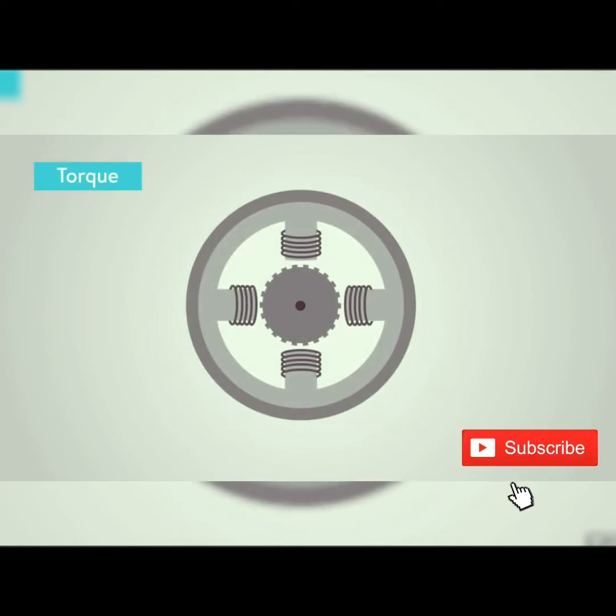What is torque? Torque is the tendency of a force to rotate an object about an axis, fulcrum, or pivot. Just as a force is a push or a pull, a torque can be thought of as a twist to an object or the rotation of the stepper motor rotor.